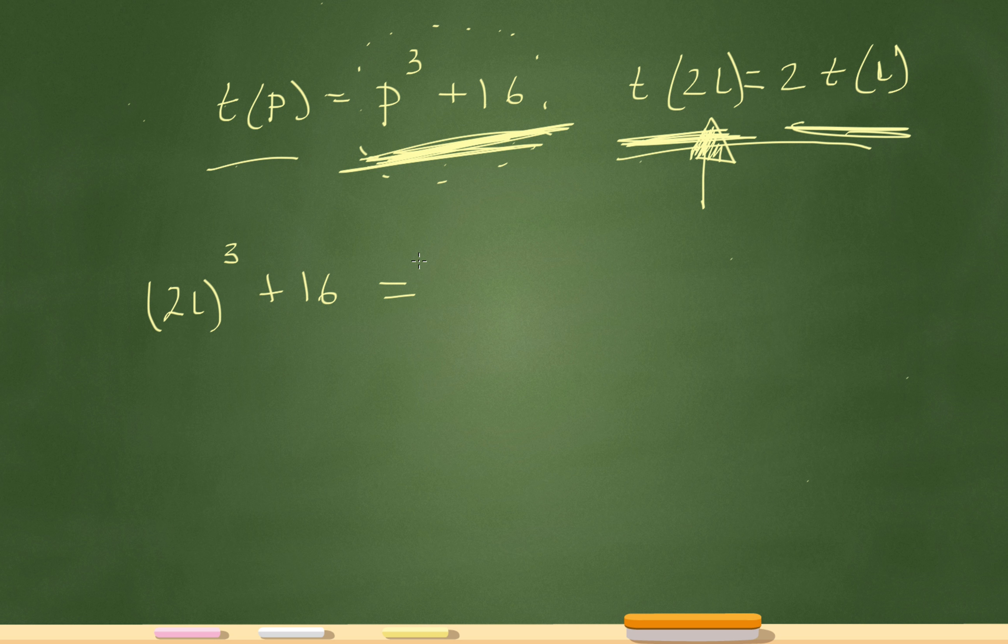Now let's move on to the right side of the equal sign. So I have the equal sign. Now let's move on to the right side. The 2 in front of the t is saying that this whole function gets multiplied by 2. But now instead of the p, what's inside the parentheses here? L.